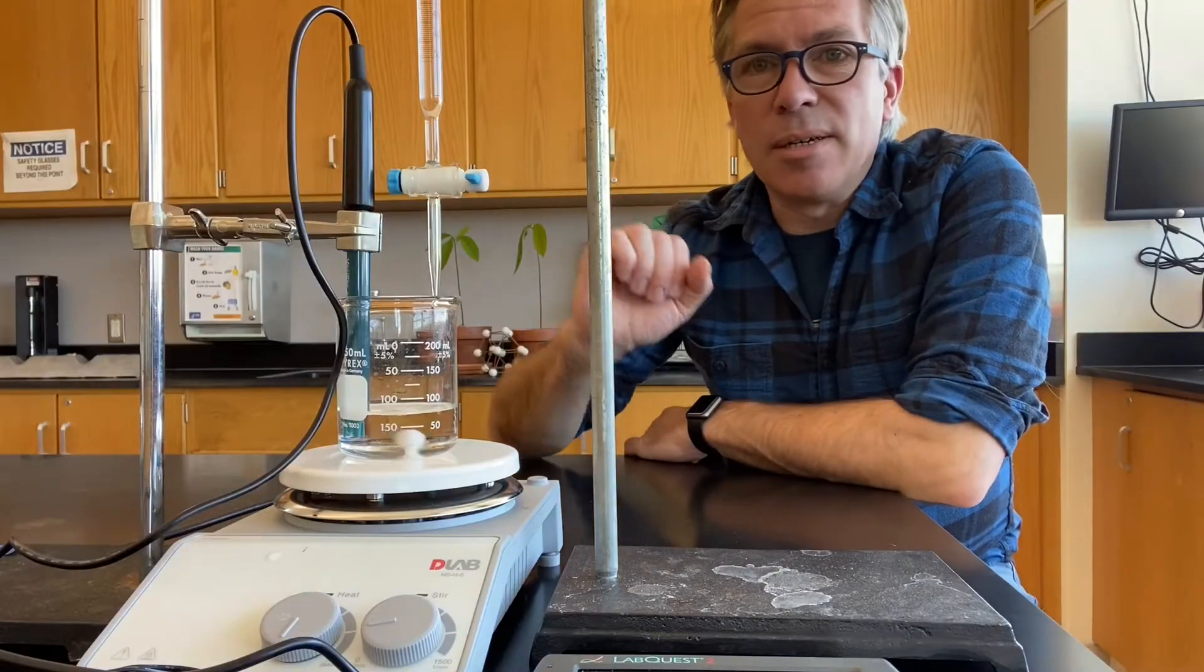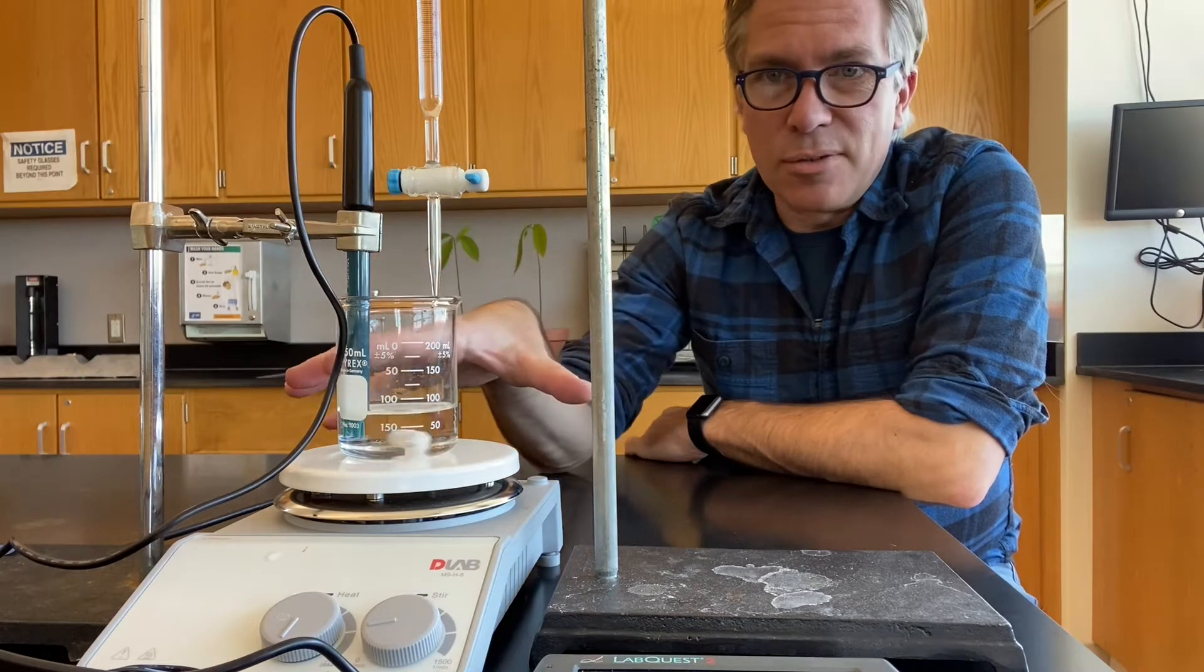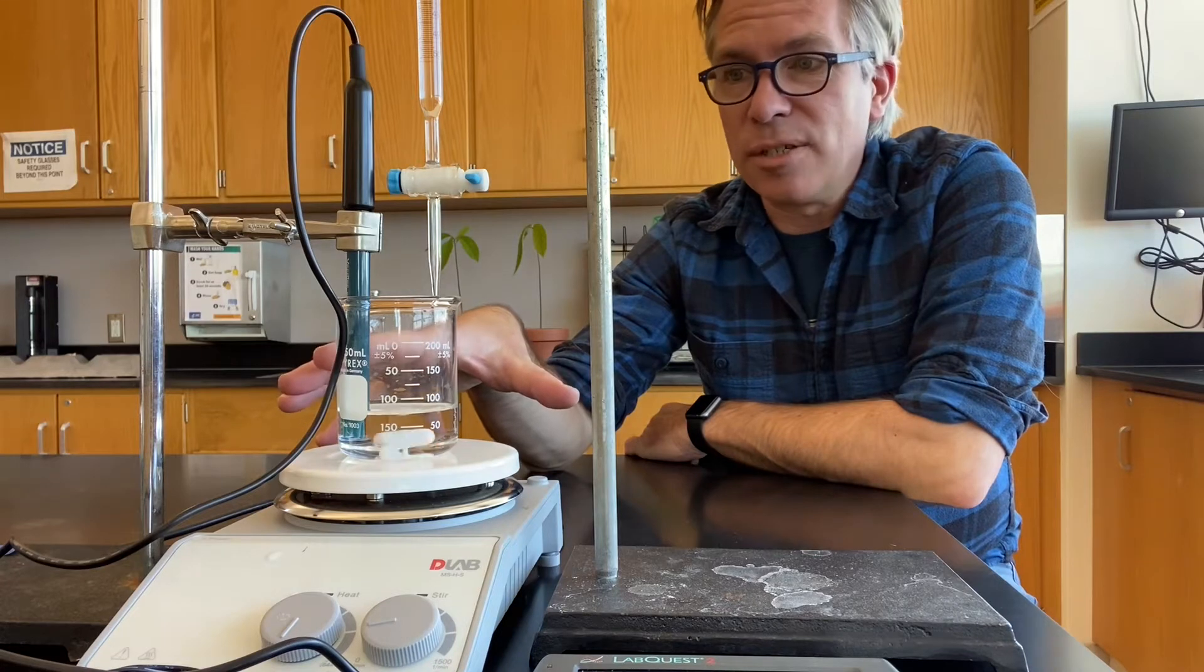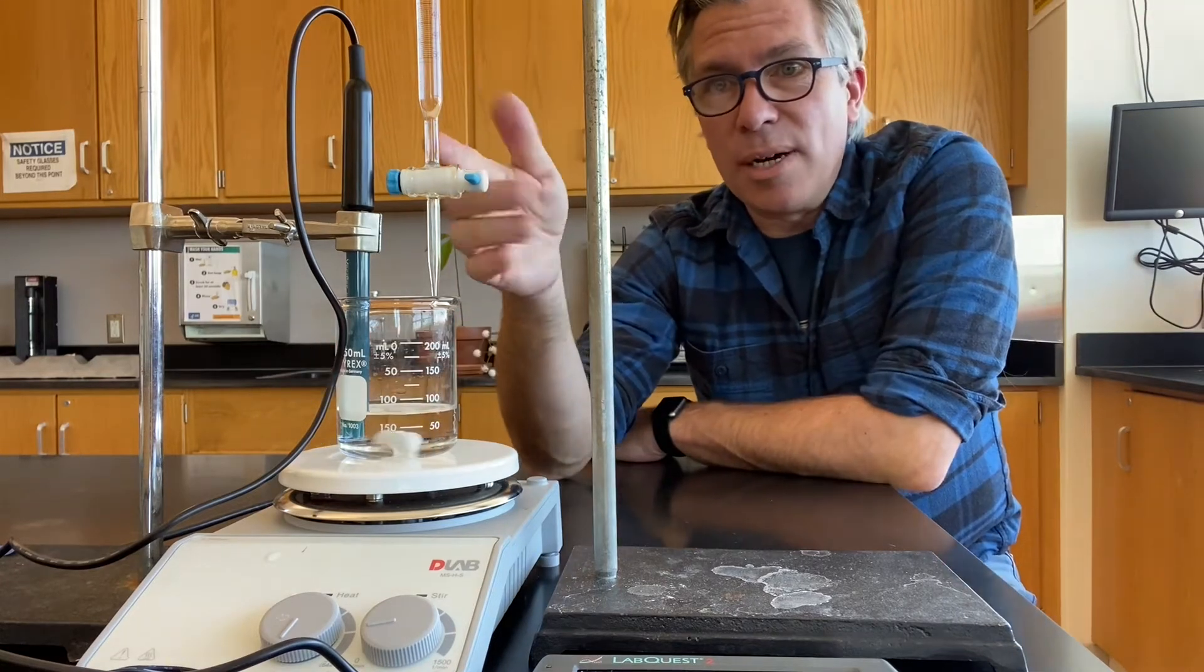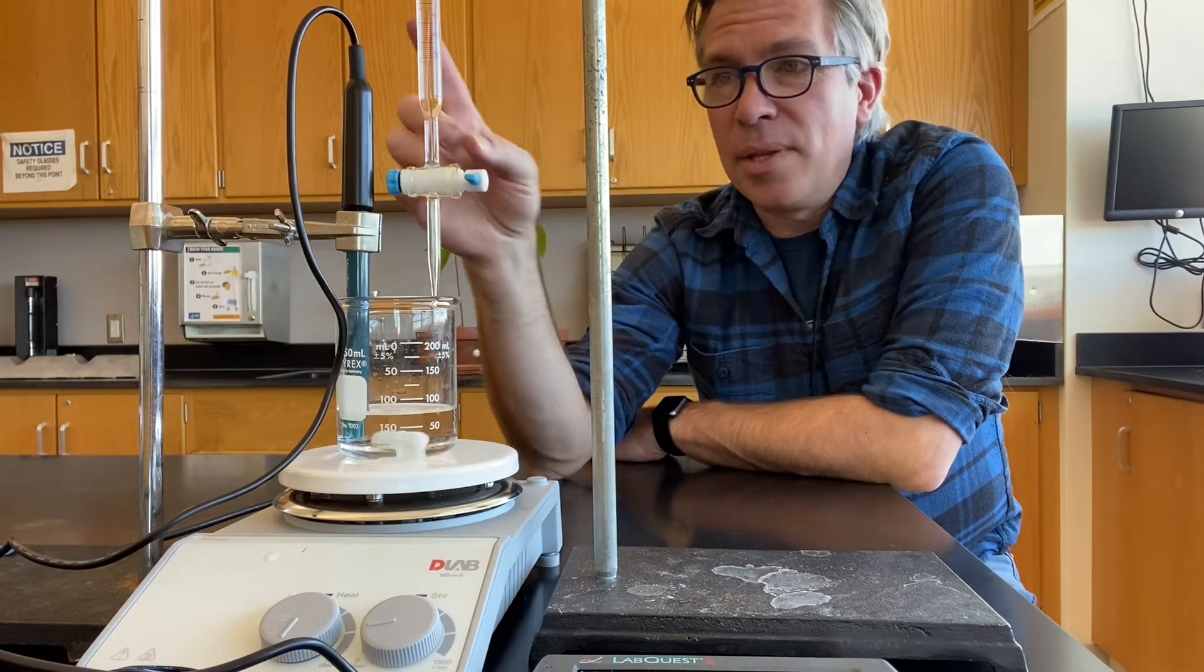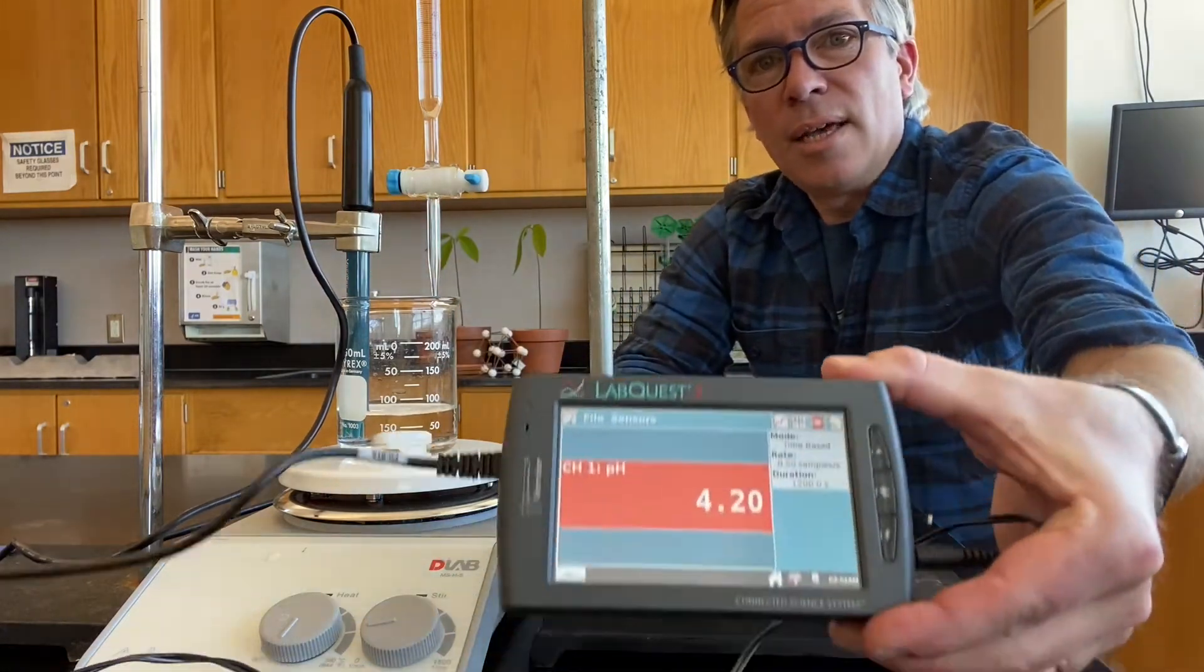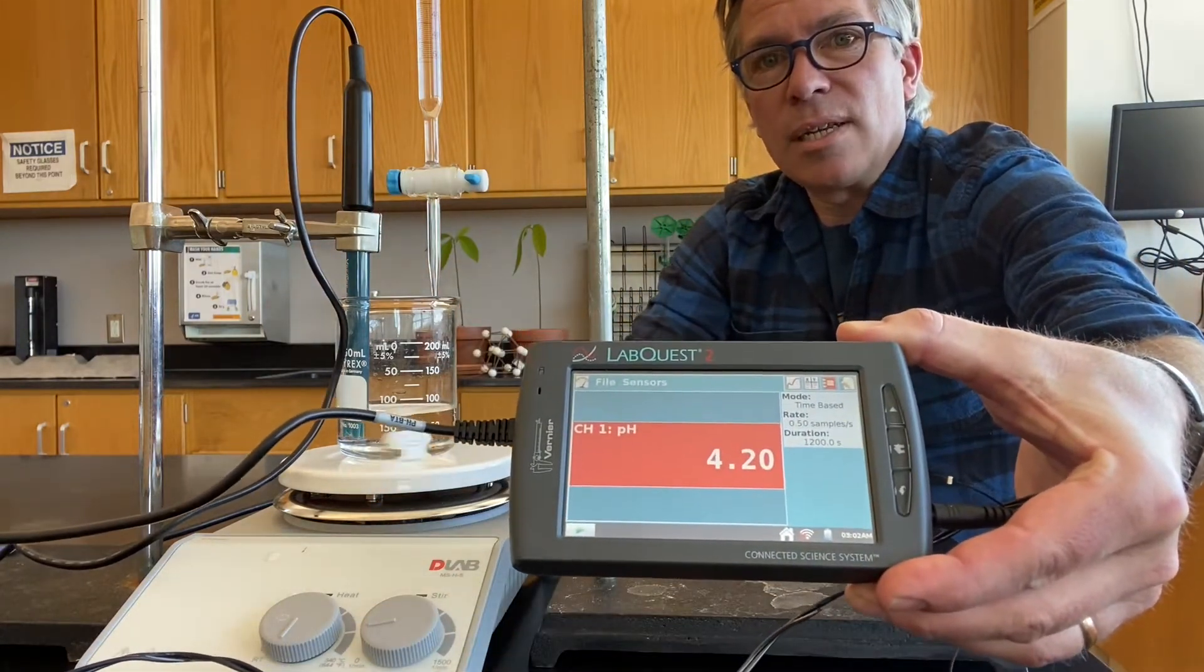I've got a really cool setup here with first of all this little awesome stirry thingy which saves me the trouble of stirring the entire time I'm doing the titration. I also have my burette with my sodium hydroxide solution in it and a pH meter which is hooked up to this little monitor, and I can see that my pH is right now 4.20.